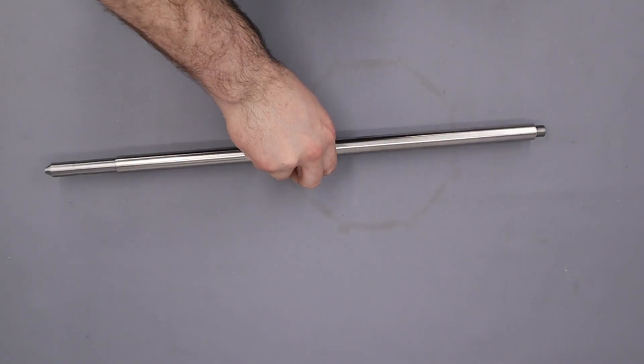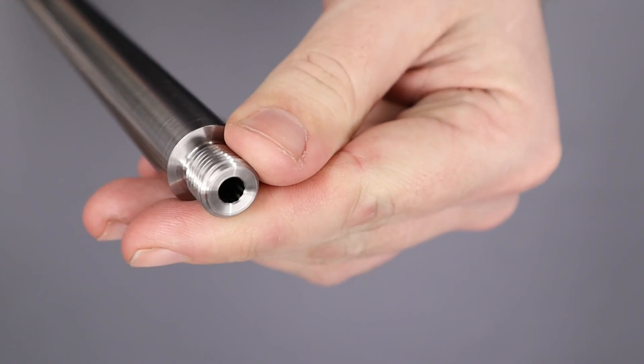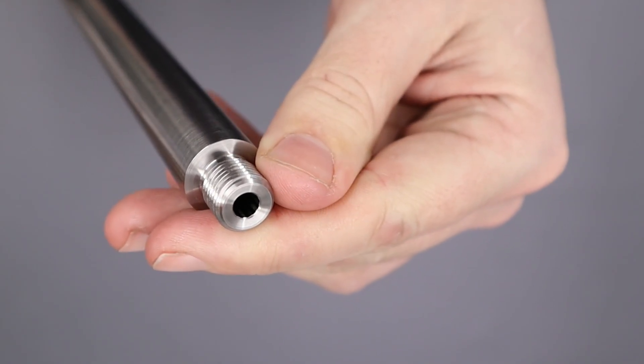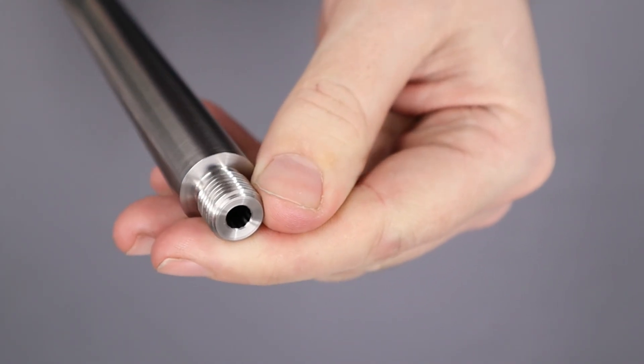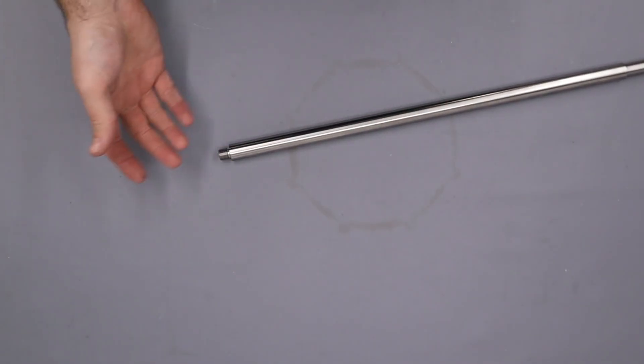The last thing we'll talk about is crowns. This is the crown we put on our barrels - it's ground then countersunk. Lots of people question that. Why do we do that? The honest answer is I've tried pretty much every single crown you could ever imagine. We've tried 11 degree crowns, 9 degree crowns, target crowns, anything you can think of I've tried. And in all honesty, I have not found one to be better than the other.